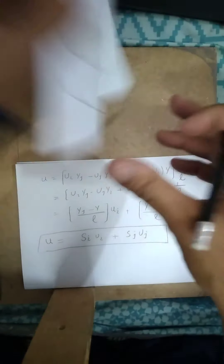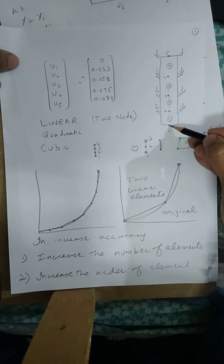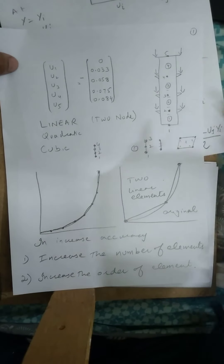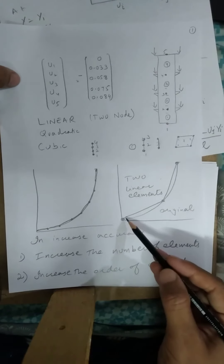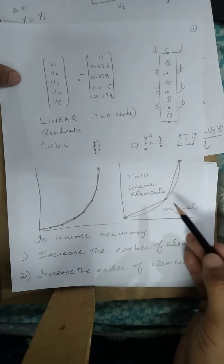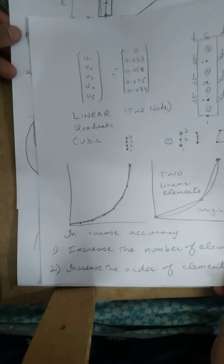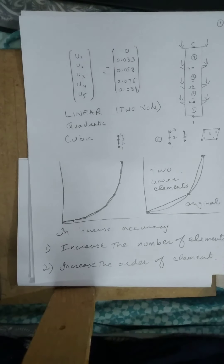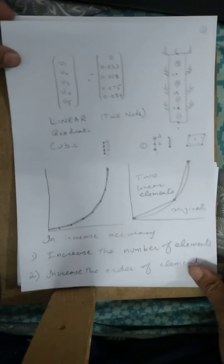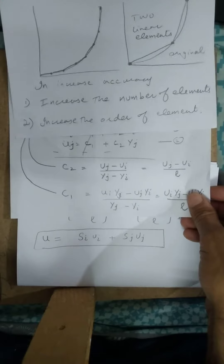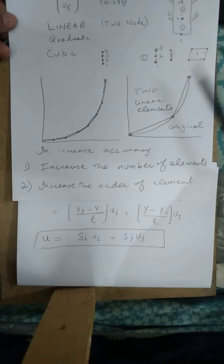With the help of this equation, we are able to find the deformations in between the elements. For example, if we have found the deformation at node 1 (u1) and at node 2 (u2), we don't know the deformations between those two nodes. Using the shape functions, we can find those. Linear shape functions have less accuracy, but we start here at the basics before moving to quadratic and then cubic.